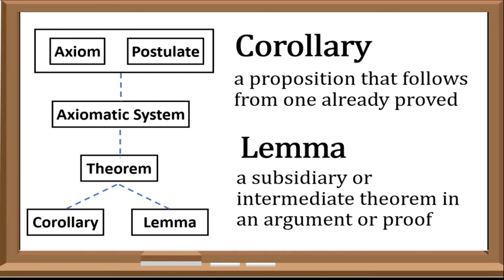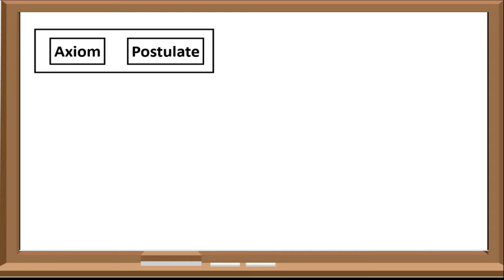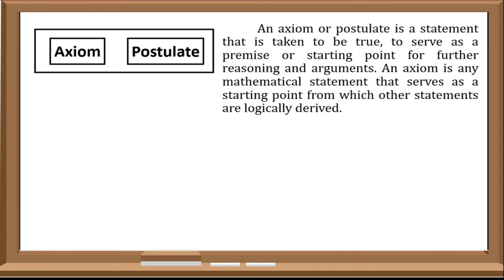Now let us go deeper into each term of the mathematical structure. As we all know, an axiom or postulate is a statement that is taken to be true to serve as a premise or starting point for further reasoning and argument. It is any mathematical statement that serves as a beginning from which other statements are logically derived. Here are the examples of postulates that we will be using throughout our discussion.